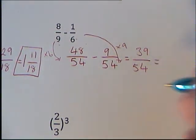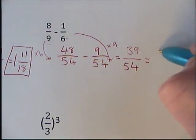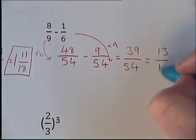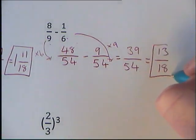Again, we can divide our top and bottom number by 3, so we'll end up with 13 over 18, and that is our final answer.